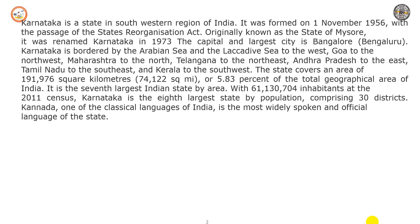It is the seventh largest Indian state by area. With 61,130,704 inhabitants at the 2001 census, it is the largest state by population, comprising over 30 districts. Kannada, one of the classical languages of India, is the most widely spoken official language.